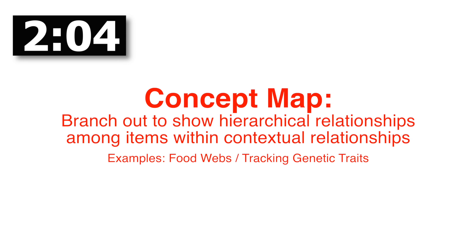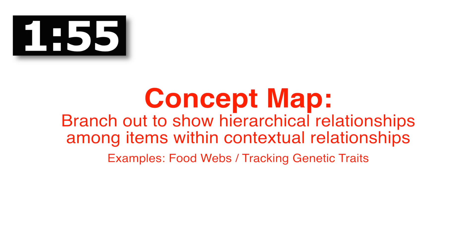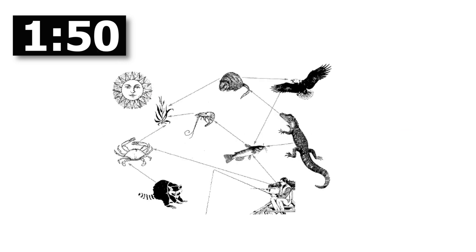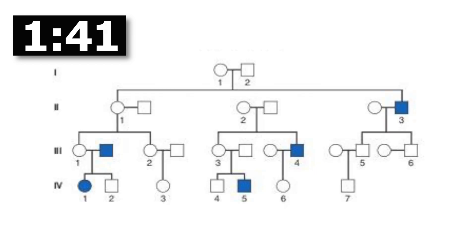The first type is a concept map, which shows how things are interconnected. A good example would be a food web illustrating how different species are connected within their environment. Another use would be showing different types of traits passed from parent to offspring. A concept map is probably not the best choice for our plant experiment, though.